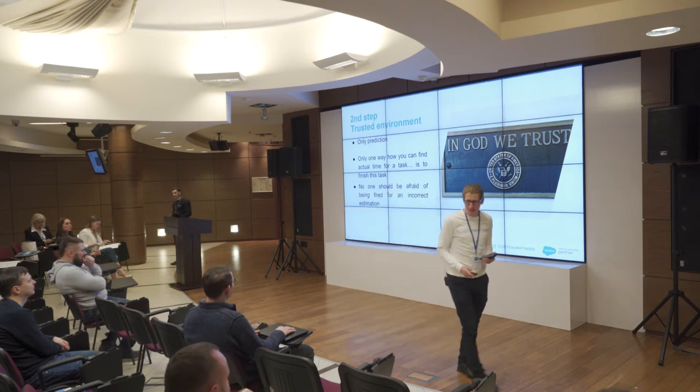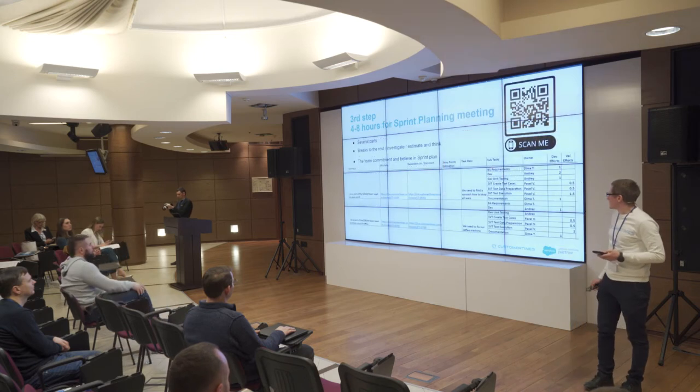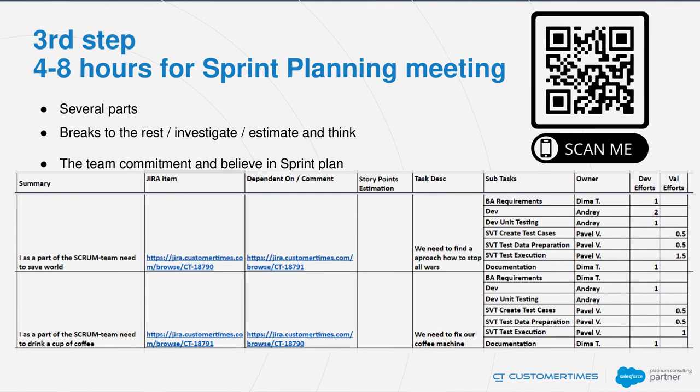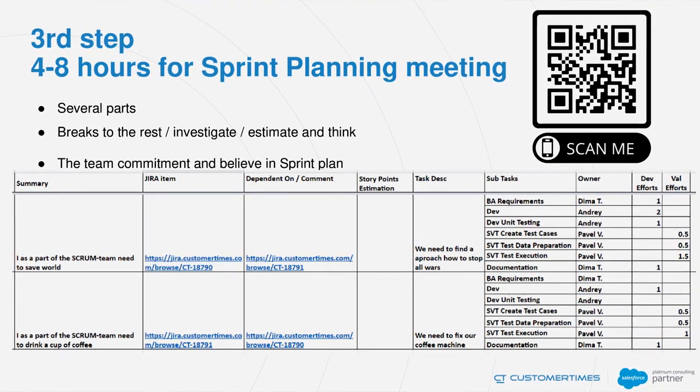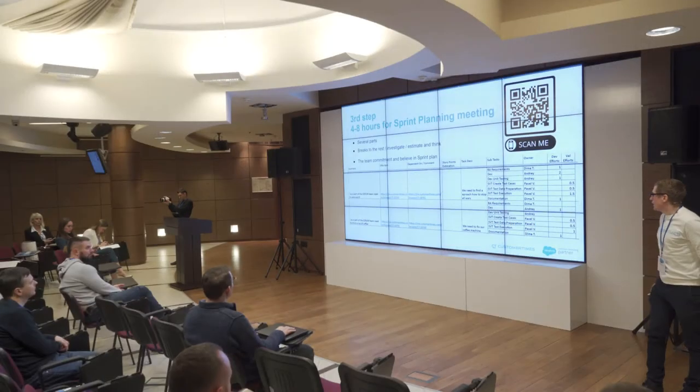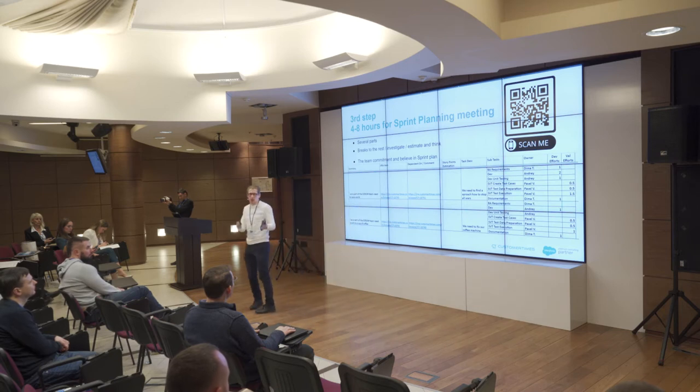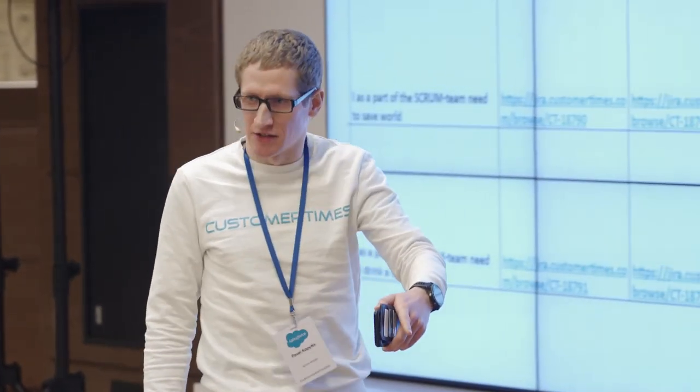At the beginning of the planning session you need to explain to every teammate that estimation is only a prediction — it's like a weather forecast. The only way to estimate a task exactly is to finish it. Take enough time for sprint planning: according to methodology, for a two-week sprint it's recommended to organize a session of four to eight hours with breaks. In my team, we gather in the morning including the product owner, key engineers, business analyst, architects, and dev lead to explain the sprint goal and identify which user stories cover it.